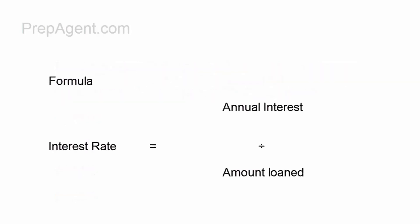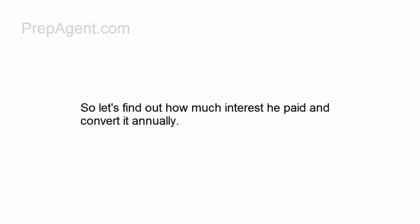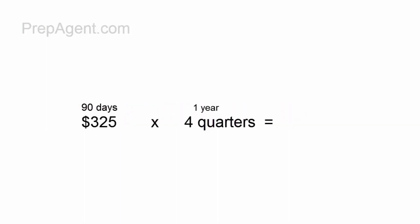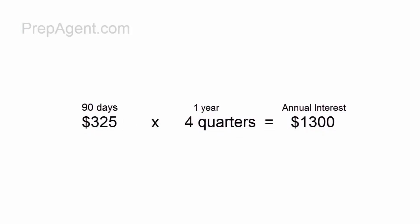Here is the formula: interest rate equals the annual interest divided by the amount loaned. Let's find out how much he paid and then convert it annually. Mr. Smith paid $325 for 90 days. 90 days is 3 months, and 3 months is 1 quarter of a year. So, $325 times 4 quarters gives you $1,300, which is the annual interest.